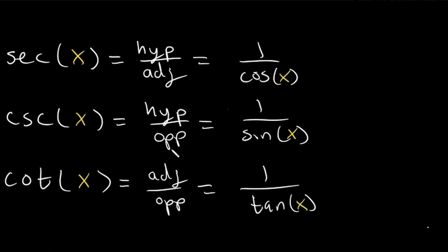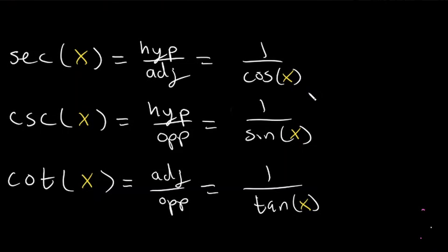Each of these is the inverse of one of the first three trigonometric functions. Remember not to get confused about secant and cosecant, because cosecant is the inverse of sine and not the inverse of cosine. Secant is the inverse of cosine, and cosecant is the inverse of sine. So sine equals 1 over cosecant, cosine equals 1 over secant, and tangent equals 1 over cotangent.